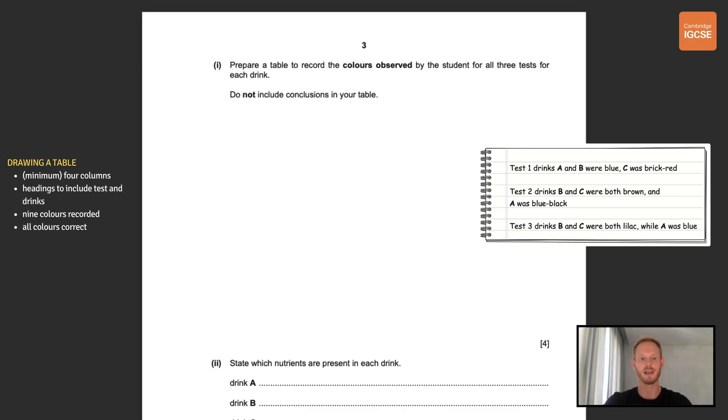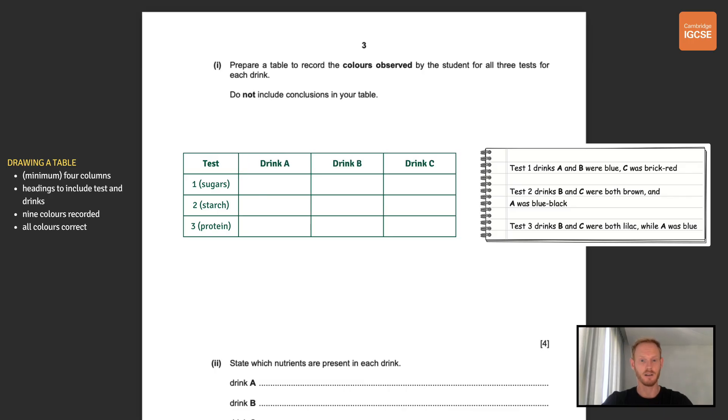Okay the first thing to address here is that our table needs to include the observations for all three tests. So let's start by creating a column to include those. Now for each of these three tests we're going to need to input the colours observed for each of the three drinks. So we're going to need to add three more columns to the right of our test column with the headers Drink A, Drink B and Drink C. Now given that we're recording the colours observed for each drink we ought to include that as well. The four marks here are for drawing a minimum of four columns, adding the appropriate headings, recording nine colours and for recording all nine colours correctly.